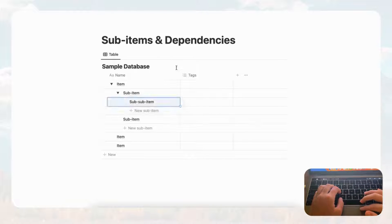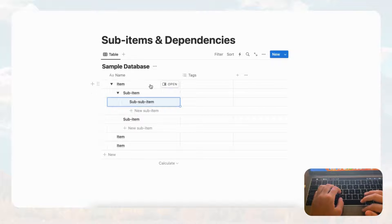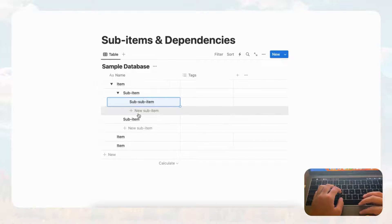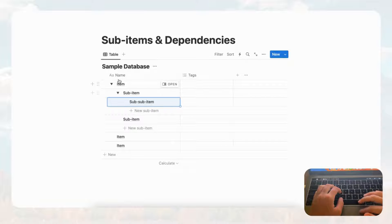This is a really good way to break down your main item, and particularly useful for tasks. If you have a main task and then sub-tasks, or a main project and what tasks lead up to that project, you can do something like that. One thing you should be aware of is that all of these sub items and items share the same properties.